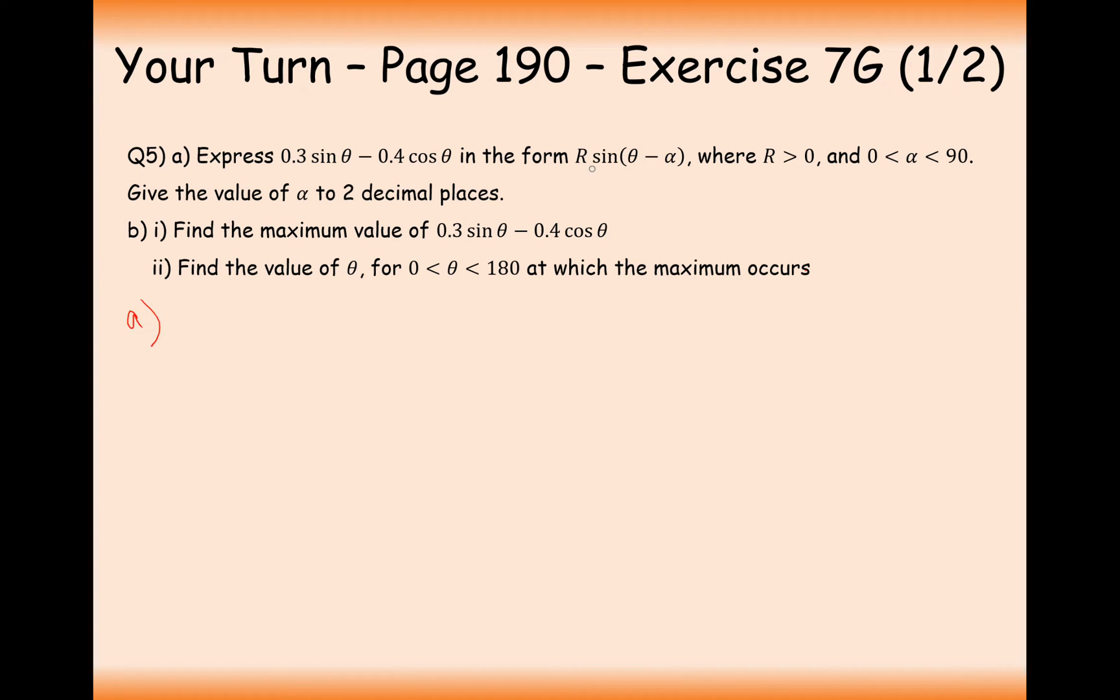Let's get started on part A. We're looking to expand R sine theta minus alpha, so let's expand that right away. It's going to expand to R sine theta cos alpha, using the angle addition rules, to take away R cos theta sine alpha. In this case, this is going to equal what we want it to equal: 0.3 sine theta minus 0.4 cos theta. We have sine thetas on both sides, so their coefficients must equal each other. R cos alpha must equal 0.3. Same with coses, both got a subtraction on it, so we can cancel those out. The coefficients of cos theta are equal, so R sine alpha equals 0.4.